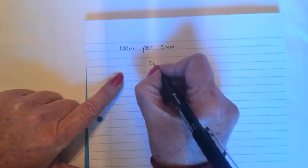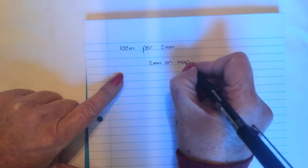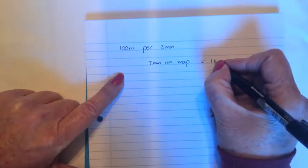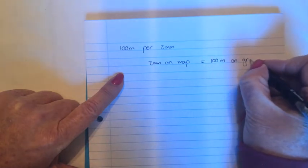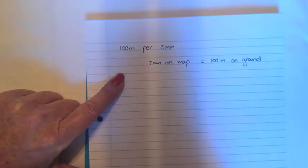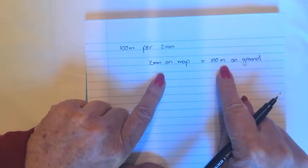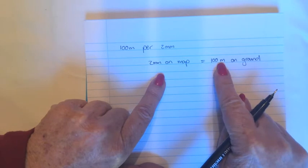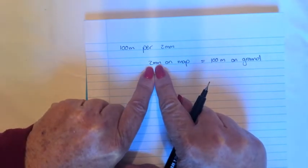Here you've got a hundred meters for two millimeters. Again, step number one, write it down as an equation starting with the map distance. So two millimeters on the map equals a hundred meters on the ground. Again, like the previous example, they are not the same unit. So I'm going to take this meters and I'm going to change them to millimeters.